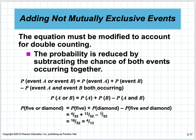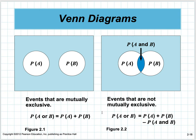If events are mutually exclusive, I get one or the other with no overlap — either a club or a spade. But if they have an intersection, like picking a five or a diamond, the part that's in both is the five of diamonds, which must be subtracted out.